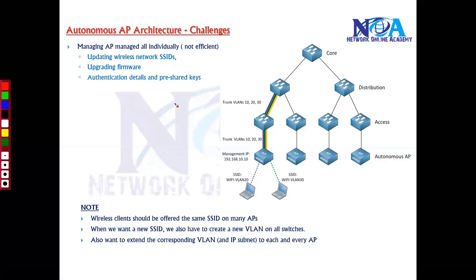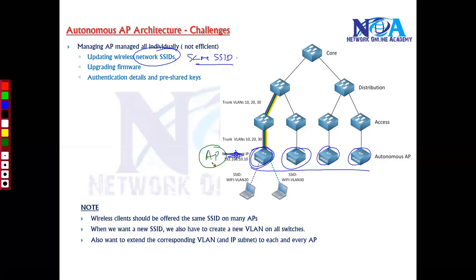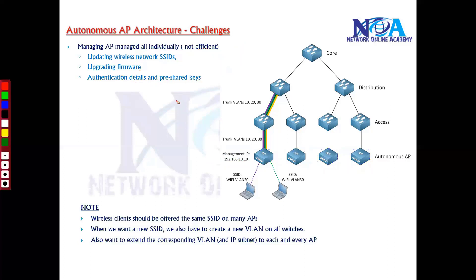Similarly for authentication information: you need to make sure that all access points have the same SSID configured. SSIDs must be configured on each and every access point, and they must match. A mismatch of SSIDs will not work. You also need to ensure authentication credentials are configured and must match on every device — any mismatch of credentials can result in improper connectivity for wireless users.